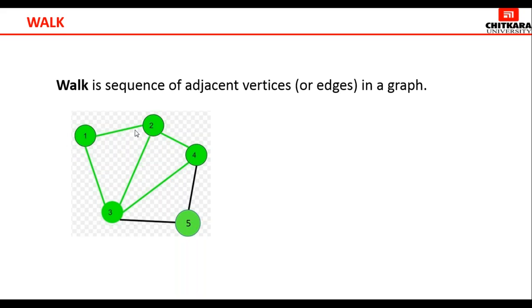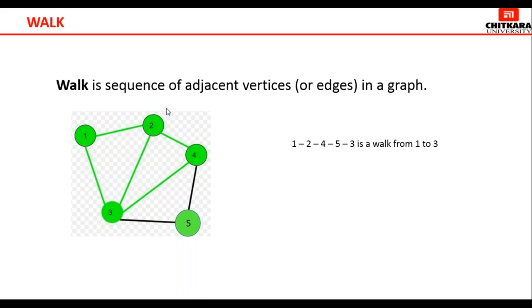Suppose you have to go from city 1 to city 5. You can go through any path — for example: 1, 2, 3, 5 is a walk. Likewise, 1, 2, 3, 4, 5 is another walk. You're just writing a sequence of adjacent vertices. You cannot go from city 1 directly to city 5 if there's no edge connecting them — you must follow adjacent vertices.